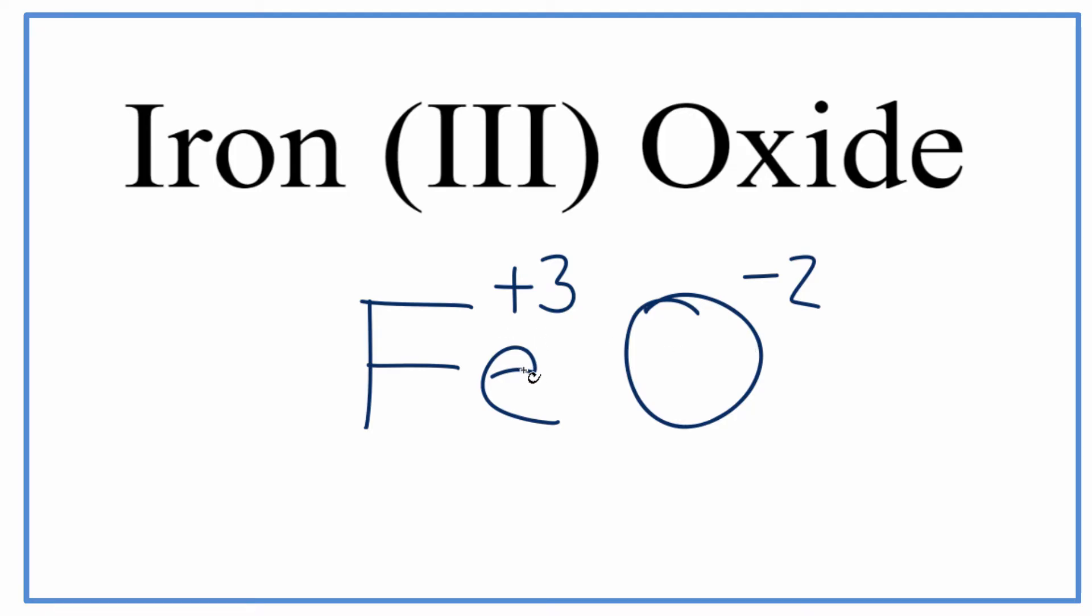The iron, if you just have Fe, it can be plus 2 or plus 3, so they have to write it so that you know what the charge is.